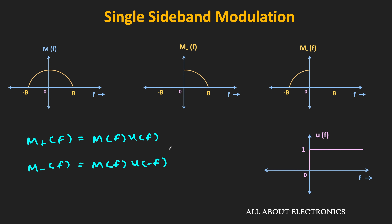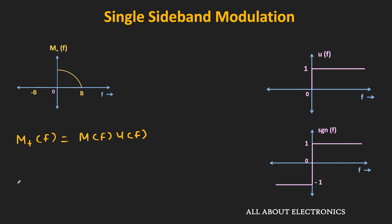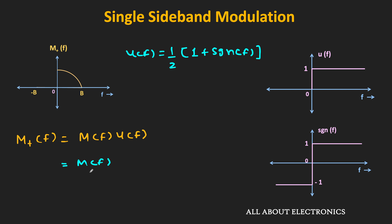Now let us write the unit step function in terms of the signum function. We have u(f) = (1/2)·[1 + sgn(f)], because when we add 1 to the signum function, on the negative side −1 becomes 0, while on the positive side it becomes 2. Dividing by 2 gives the unit step function. Therefore M+(f) = M(f)·(1/2)·[1 + sgn(f)].